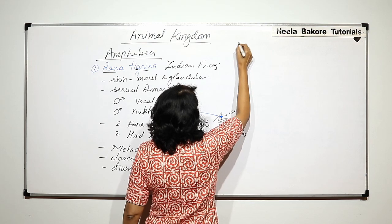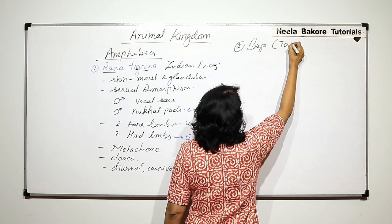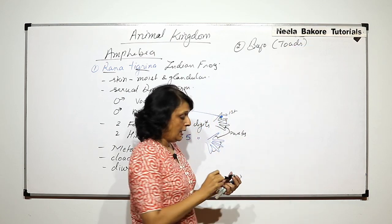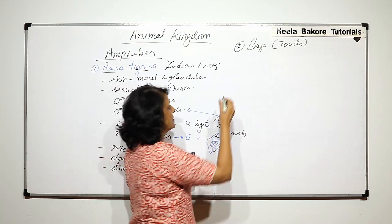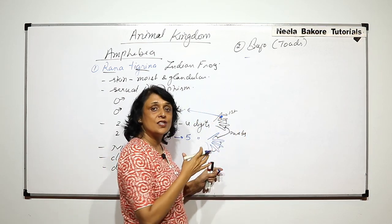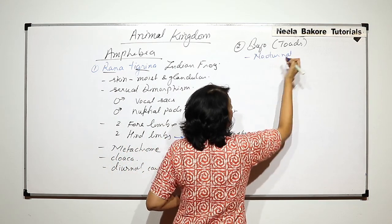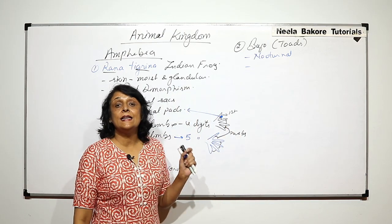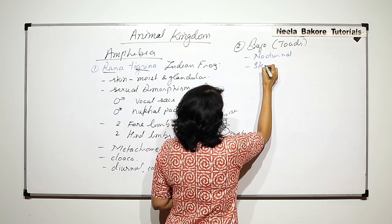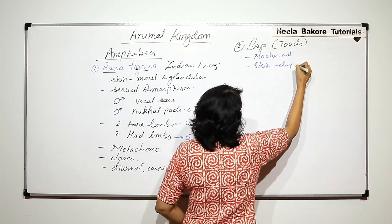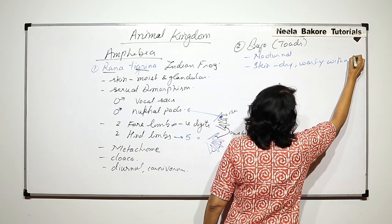The next example is Buffo, which we call toads. Toads are very similar to frogs but there are some differences. They are larger than frogs but are nocturnal. They are also carnivorous. Their skin is dry, warty, and without glands.